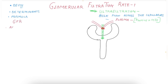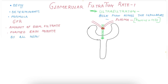We are going to study the definition, the determinants of GFR, and the formula for GFR. Beginning with the definition: GFR is equal to the amount of glomerular filtrate formed each minute by all the nephrons of both the kidneys. Its value is 125 ml per minute, or 180 liters per day.